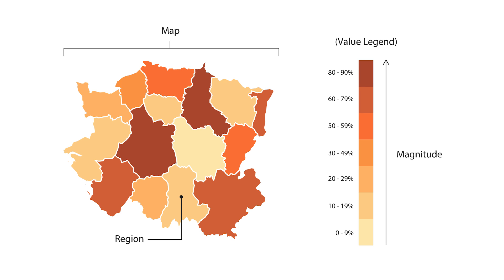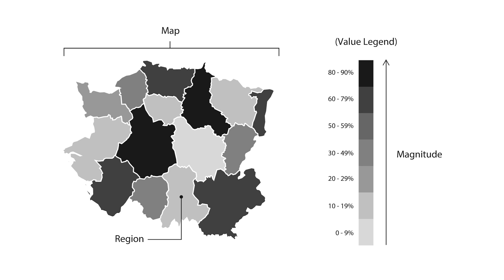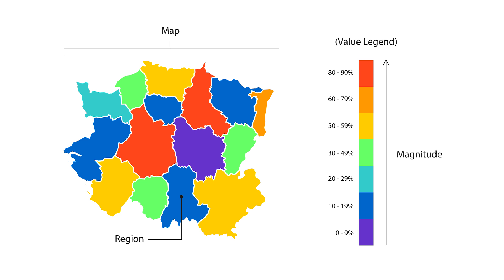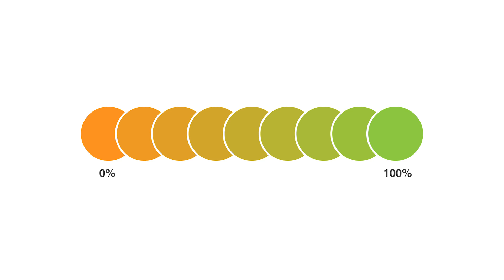The data variable uses colour progression to represent itself in each region of the map. Typically this can be a blending from one colour to another, a single hue progression, transparent to opaque, light to dark, or an entire colour spectrum.